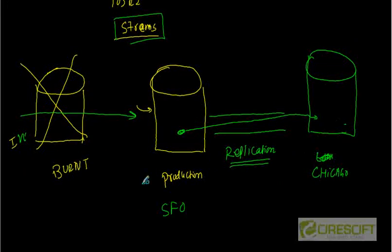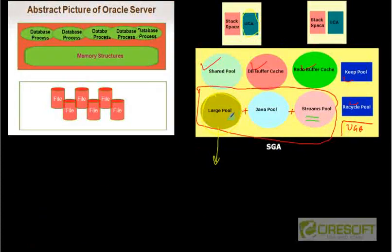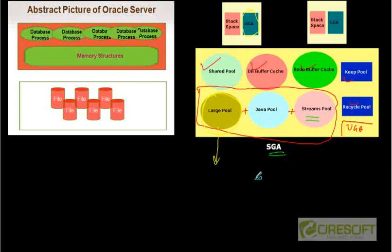The Stream Pool is used when you perform streaming operations. That covers all three remaining pools. Remember, these pools are not managed by an LRU algorithm — the memory management for these pools works differently. In summary, the memory structures are governed by the SGA, and some are managed by LRU while others use malloc or calloc style allocation.